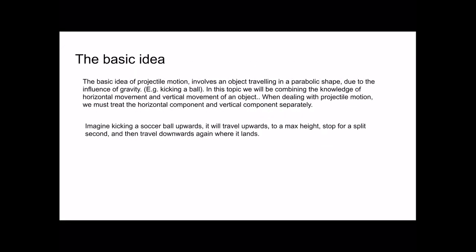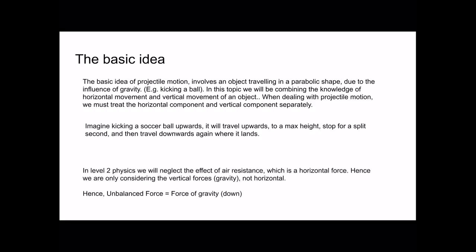Imagine kicking a soccer ball upwards — it travels to max height, stops for a split second, then travels down and lands. In level 2 physics, we neglect the effect of air resistance. We say the effect is too small to be negligible. So the only unbalanced force acting on the object during motion is the force of gravity, which acts downwards at 9.8 m/s² on the surface of the earth.